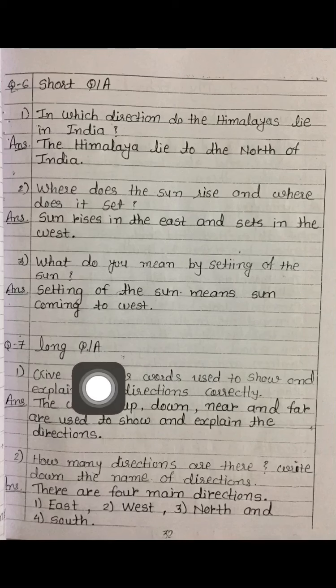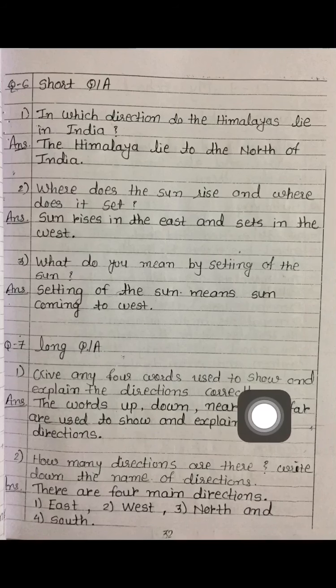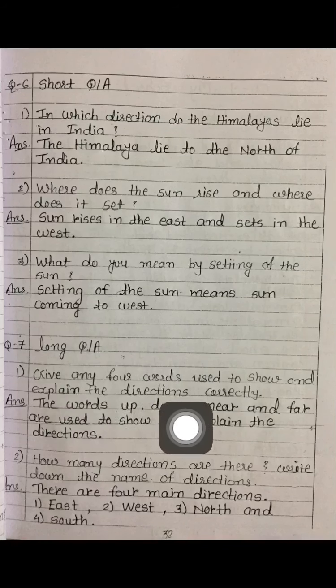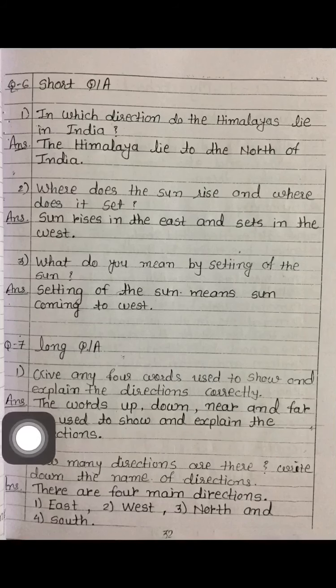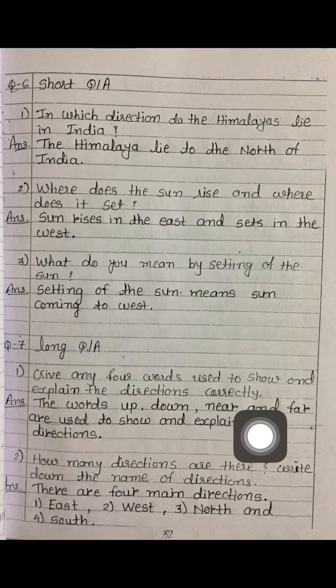Now see question number 7, long question answer. First question: give any four words used to show and explain the directions correctly. We need to write four words that help explain directions. The answer is: the words up, down, near, and far.